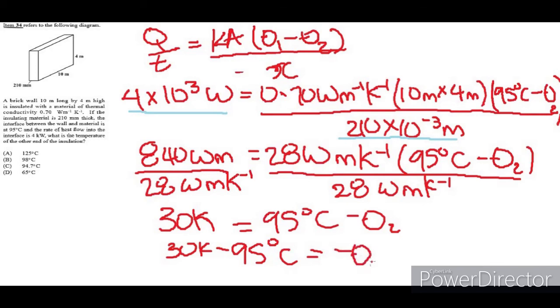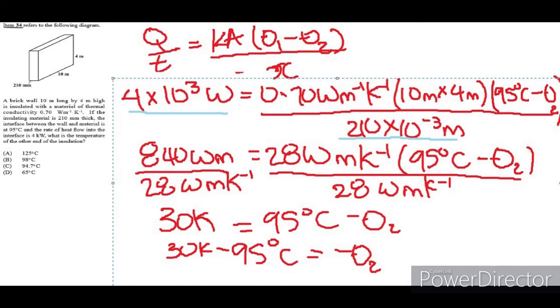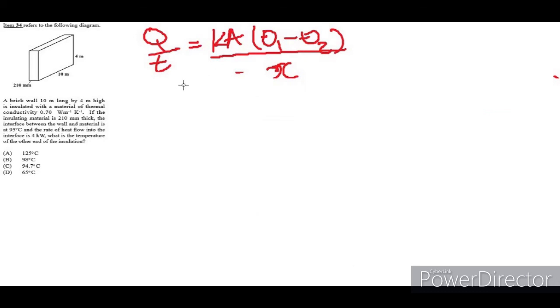Equal to minus theta 2. And this is getting crowded. Let me get stuff off the page. I think I should just erase everything off. I believe I had 30 kelvin minus 95 degrees Celsius. You can say kelvin too, or you could say 30 degrees Celsius. It doesn't really matter at this point in time. It's equal to minus theta 2.